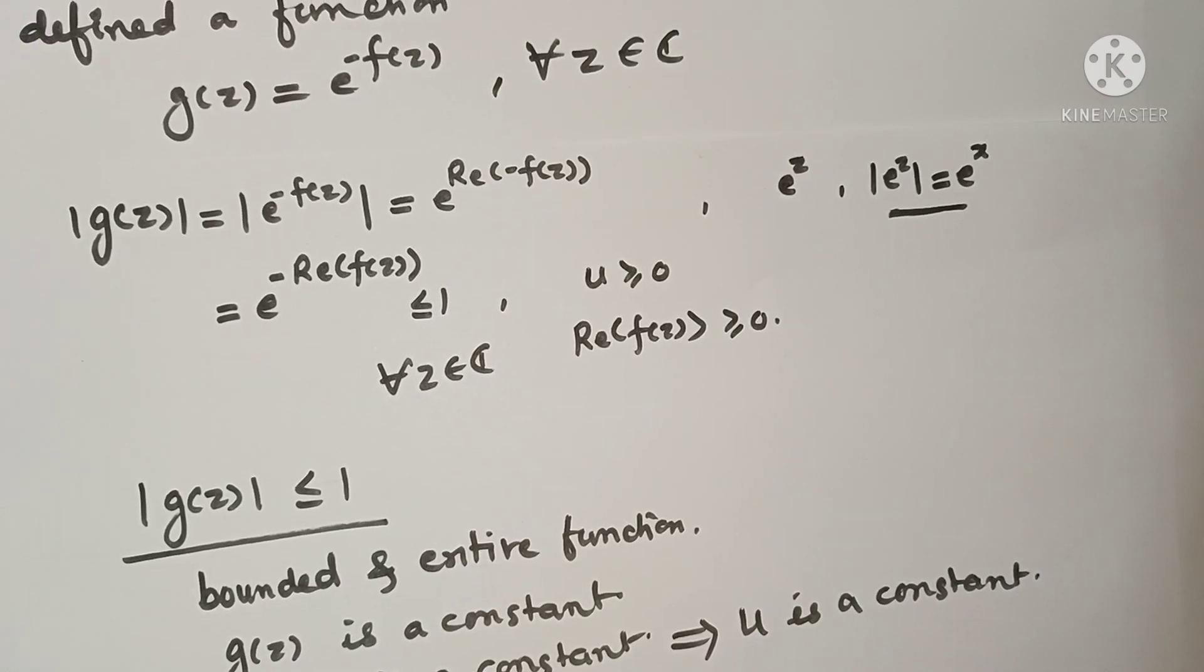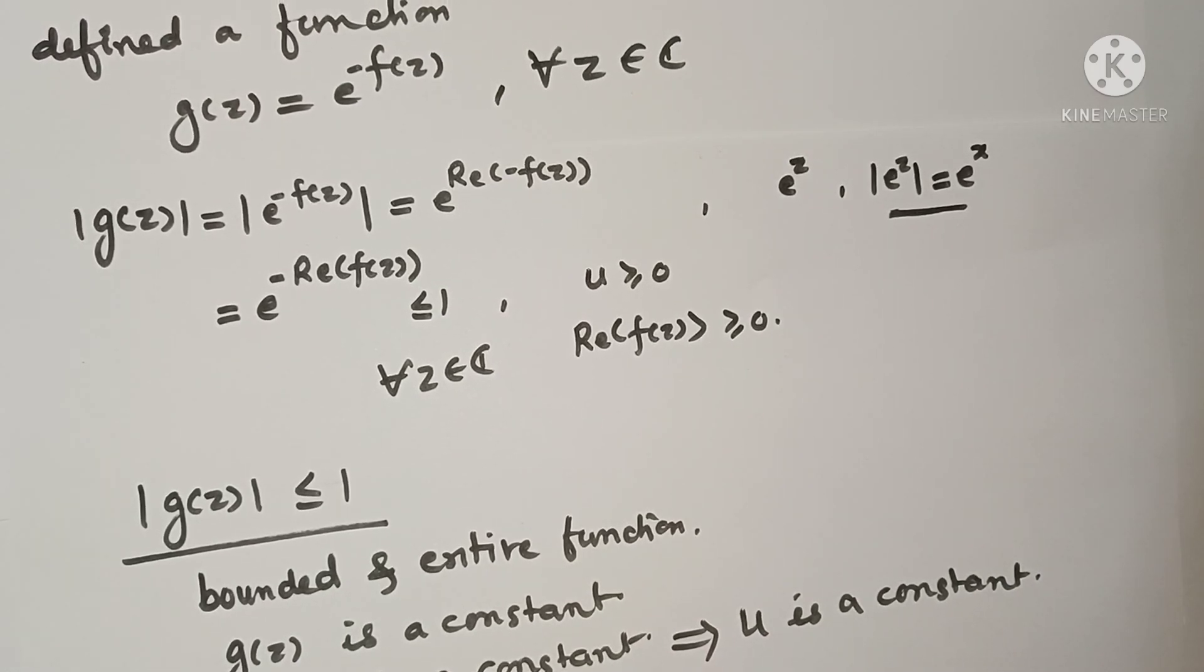Hence, proof. So here we have statement A: every non-negative harmonic function on C is constant. It is a true statement.